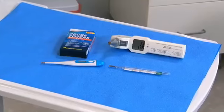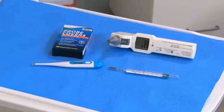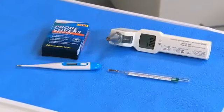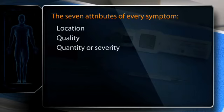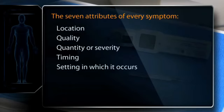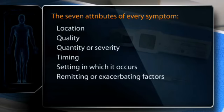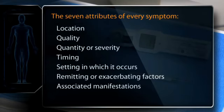Fever refers to an abnormal elevation in body temperature. Ask about fever if patients have an acute or chronic illness or especially infection. Recall the seven important attributes of every symptom: location (where is it and whether it radiates), quality (can the patient describe what it is like), quantity or severity (if there is pain, can the patient rate it on a scale of 1 to 10), timing (when does it start, how long does it last, how often does it occur), the setting in which the symptom occurs, remitting or exacerbating factors, and associated manifestations.